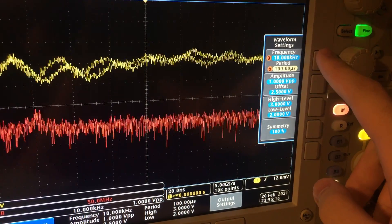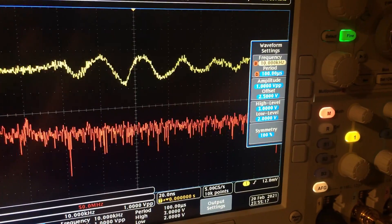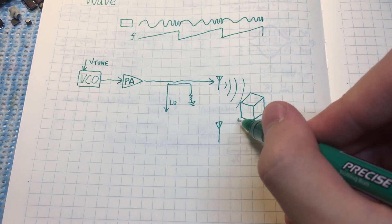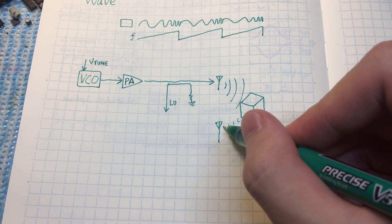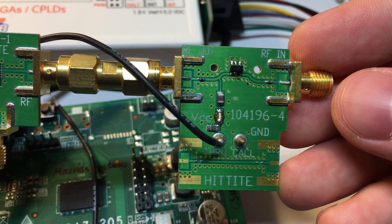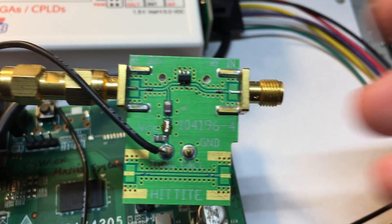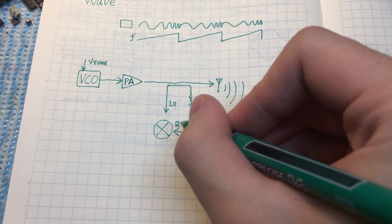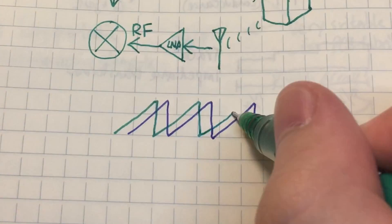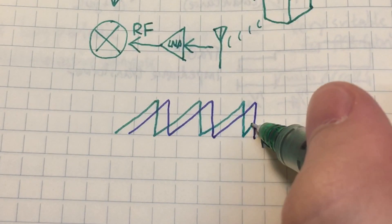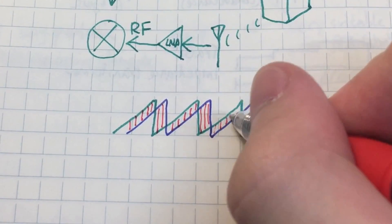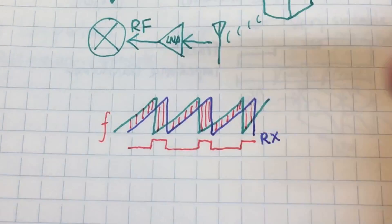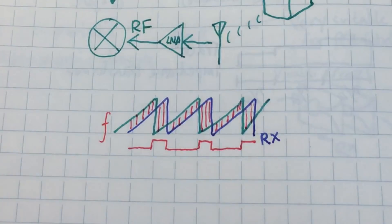For most of our current testing, we are using the function generator on our scope to try out various parameters. The return signal is much weaker than the transmitted signal. It's amplified by a low noise amplifier or gain block before going into the mixer. The mixer is a non-linear device that compares the frequency of the return with the frequency of the currently transmitted signal. It outputs the intermediate frequency, which is basically the frequency difference between LO and RF — this is the baseband that we're interested in.